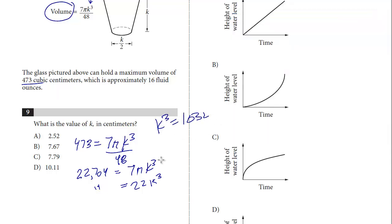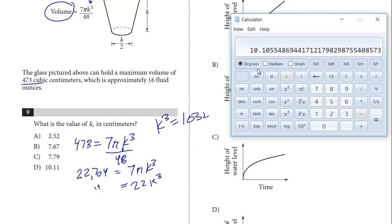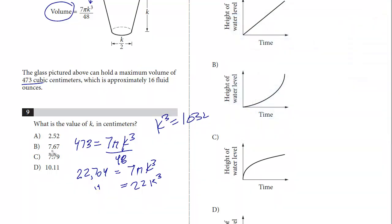The last step is we take the cube root to solve for k. Taking the cube root of 1,032 gives us 10.11 if we round up. And that's the answer: D.